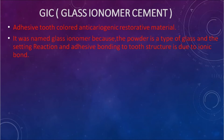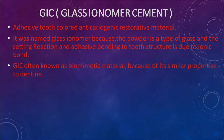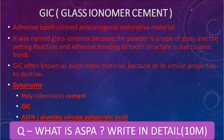It was named glass ionomer because the powder is a type of glass and the setting reaction and tooth bonding is due to ionic bonds. It is known as a biomimetic material, meaning it is used because of its similar properties to dentine. Synonyms include poly cement, GIC, and ASPA — which stands for aluminum silicate polyacrylic acid. A question may come as: what is ASPA? Write in detail about it.